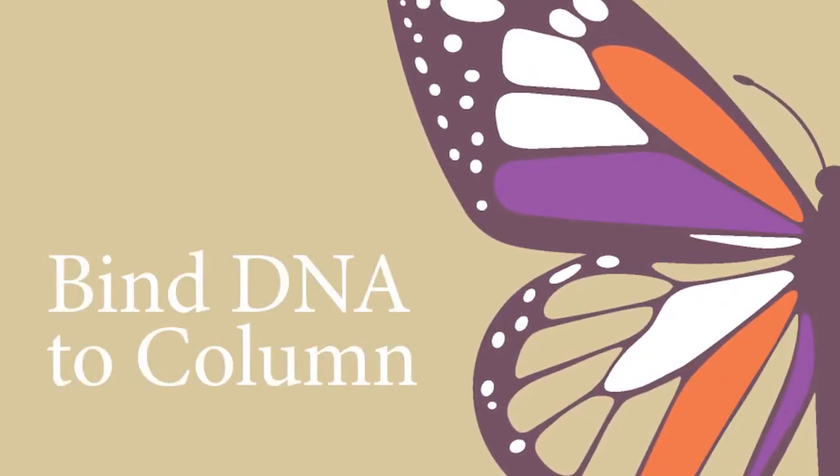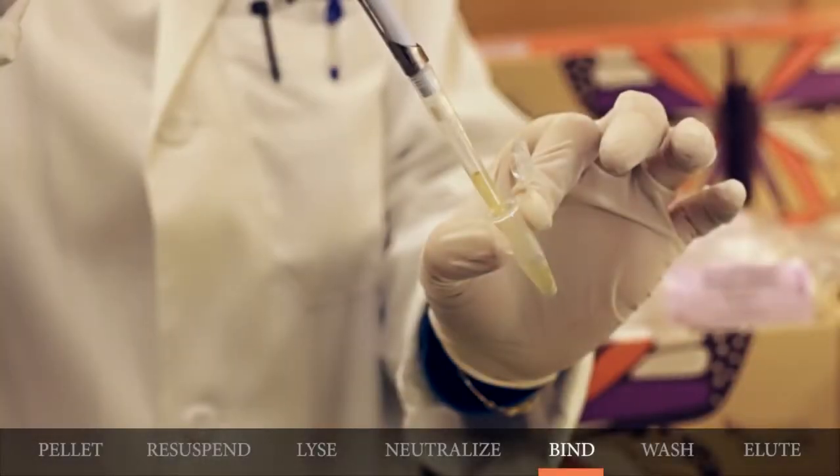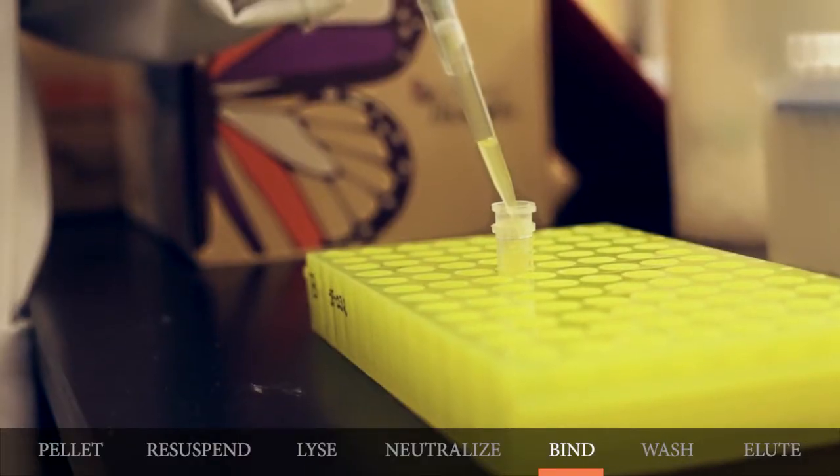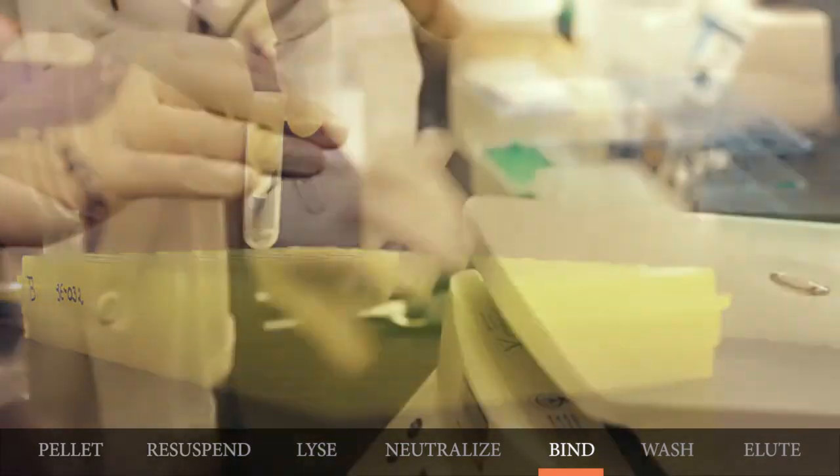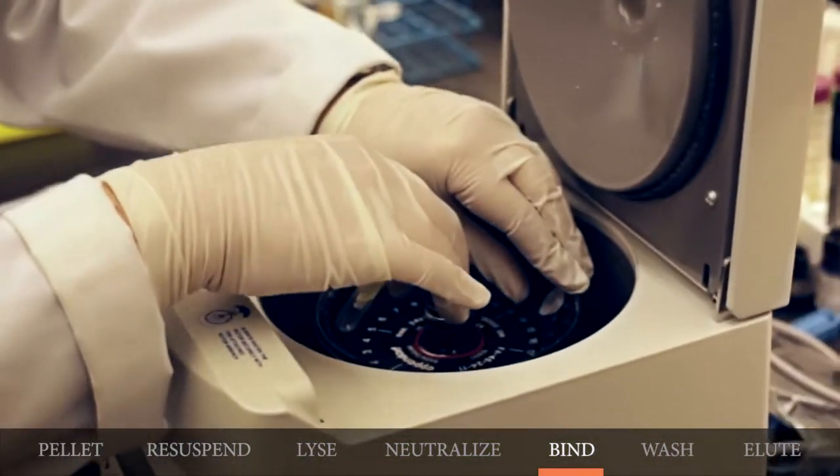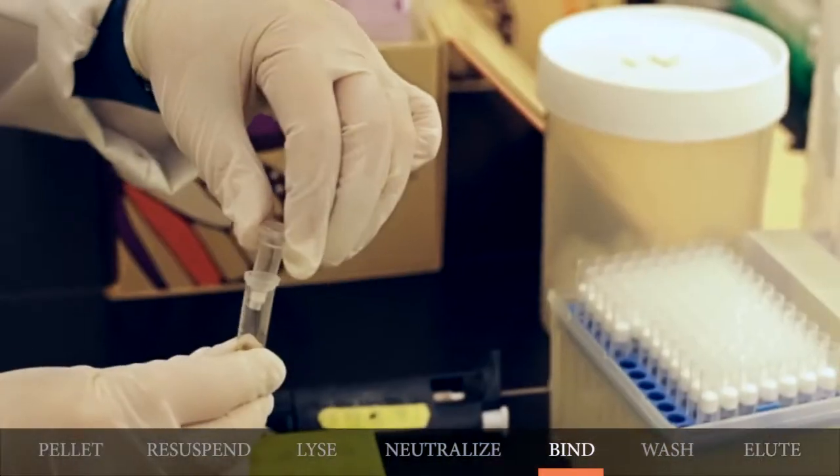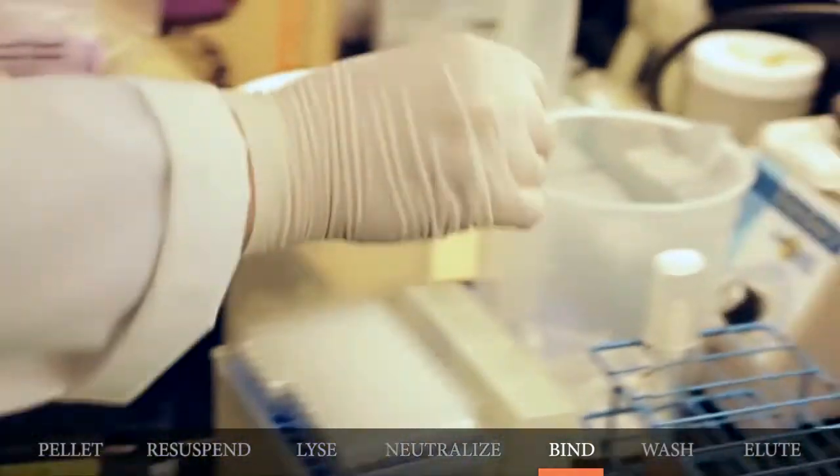Now to the binding step. You will carefully transfer the supernatant which contains the plasmid DNA to a spin column and you will centrifuge for one minute. The DNA is now bound to the column's matrix. You will remove the column and you will discard the flow-through.